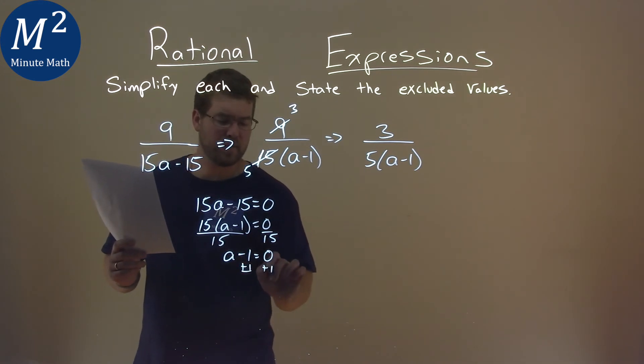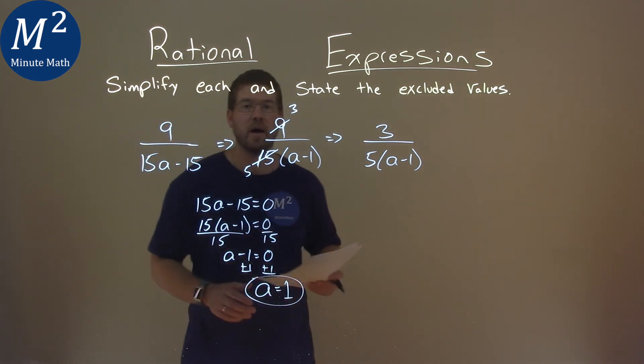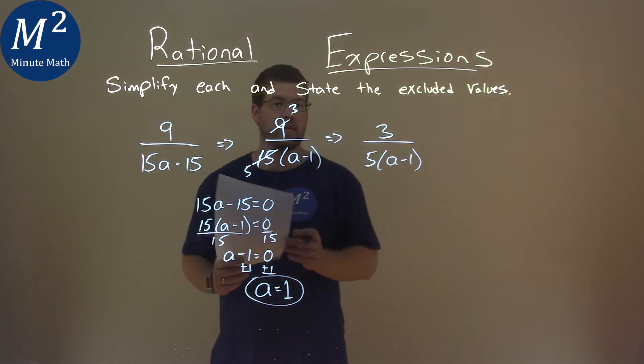We add a 1 to both sides, and a equals a positive 1. So 1 is the value that causes our denominator to equal 0, and so 1 is our excluded value.